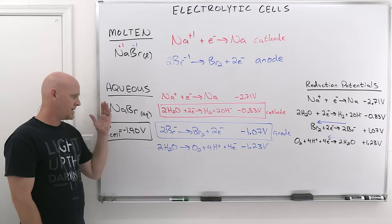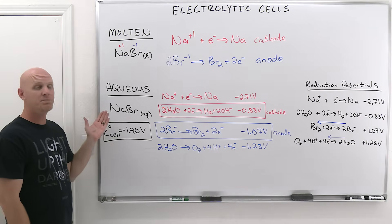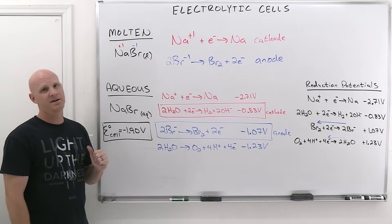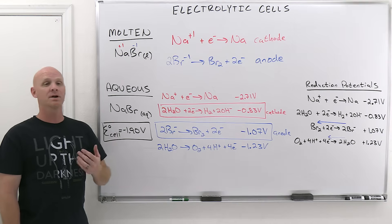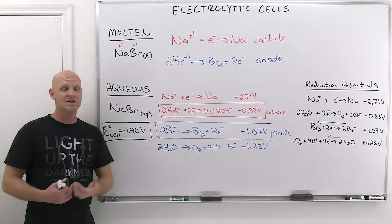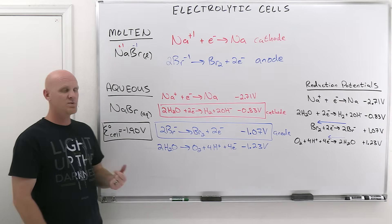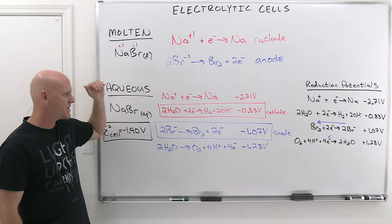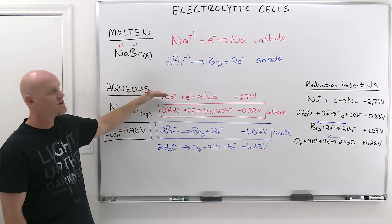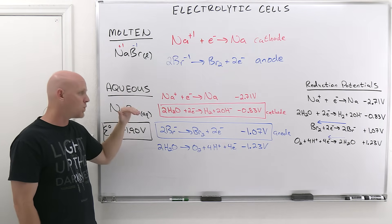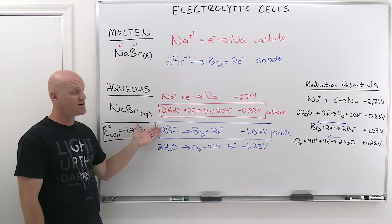If you had this aqueous salt at one molar concentration (standard conditions) and plugged it into a AA battery, it would not work — a AA battery supplies 1.5 volts and we need a minimum of 1.9 volts. But if you took two AA batteries hooked up in series, you'd have the equivalent of a 3 volt battery, and that would work. Even with overvoltage, you still get just one reduction at the cathode and one oxidation at the anode — whichever of the two is easier in each case.